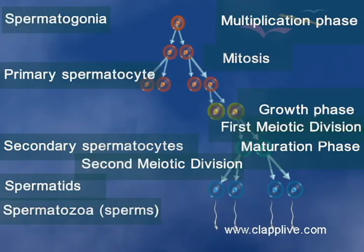After spermiogenesis, sperm heads are embedded in the Sertoli cells. Later, they detach and reach the lumen of the seminiferous tubules by a process called spermiation.